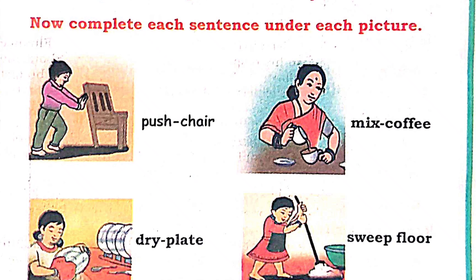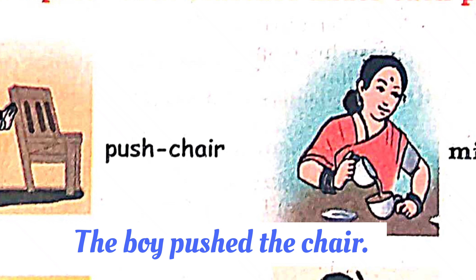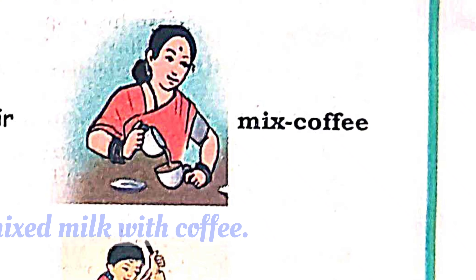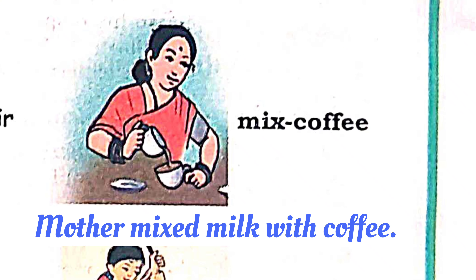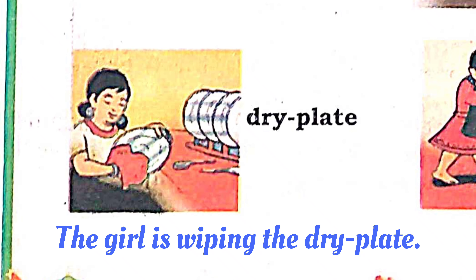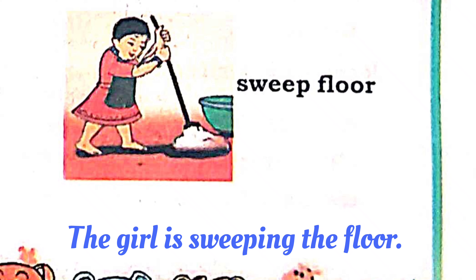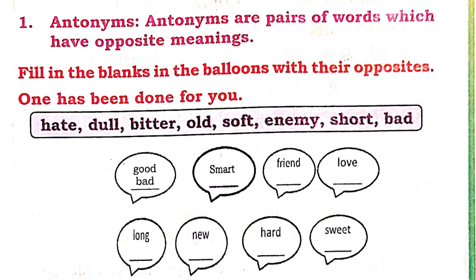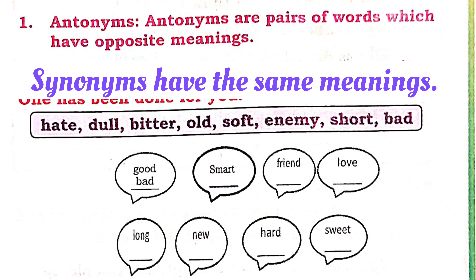Create sentences. Complete the sentence under each picture: The boy pushed the chair. Mother mixed milk with coffee. The girl is wiping the dry plate. The girl is sweeping the floor. Antonyms are pairs of words which have opposite meanings. Synonyms have the same meanings.